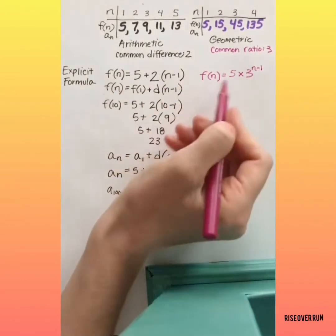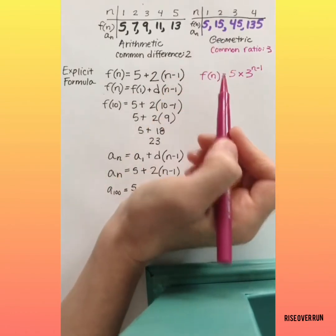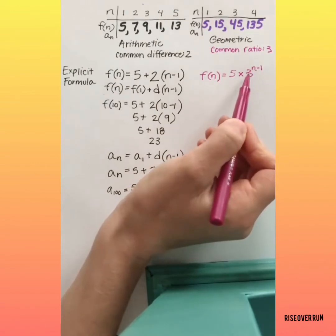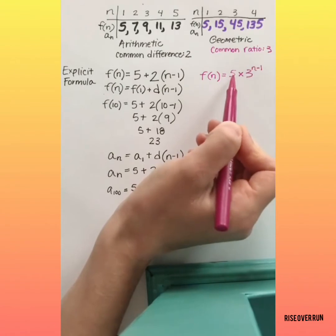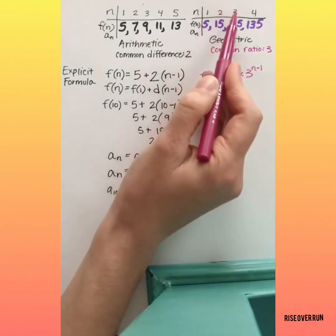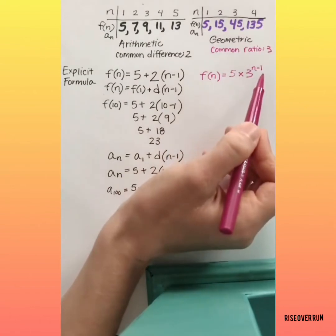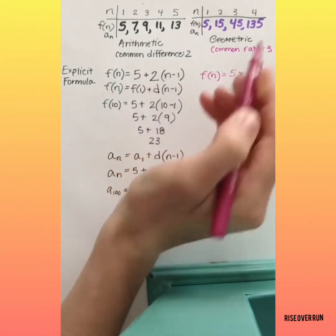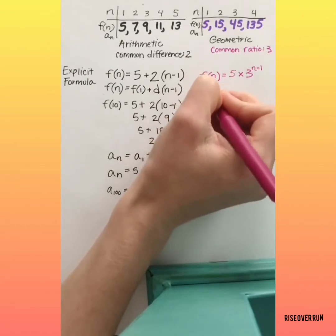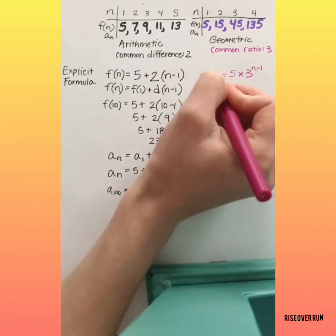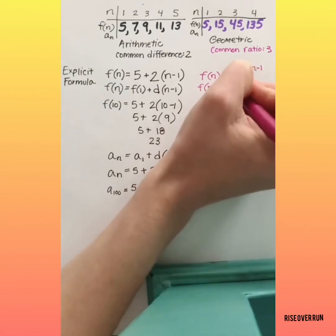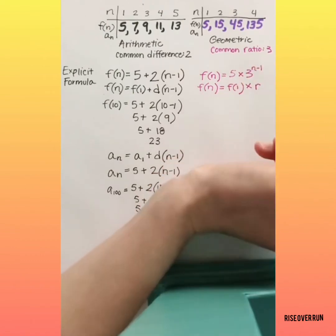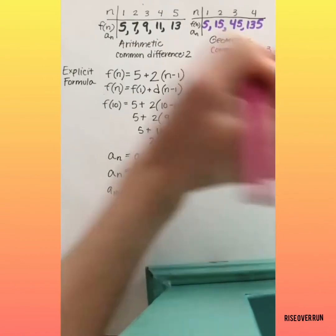Let's think about why this works. If we want to find the first term, we plug in a 1. 1 minus 1 is 0. 3 to the 0 power is 1, so we would just have our 5. But as we plug in 2, 3, 4, or any other number to find a greater term, then we'll be multiplying by 3 over and over. So the general format is: f of n equals the first term times the common ratio r raised to the power of n minus 1.